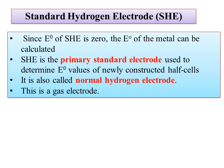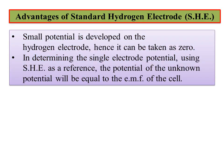You can use SHE as a normal hydrogen electrode or gas electrode. You can measure the EMF of the cell using it as zero. The standard hydrogen electrode potential is zero, and the EMF of the cell is exactly equal to the potential of the unknown half cell.